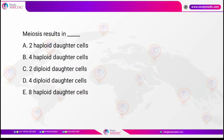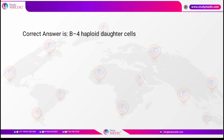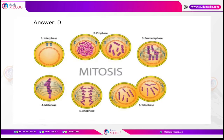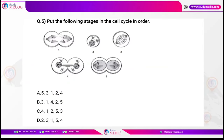Meiosis results in 4 haploid daughter cells — the answer is B. In the diagram showing stages of the cell cycle, the correct sequence is: interphase, followed by prophase, metaphase, anaphase, and telophase. In the picture, 2 is the interphase, 3 shows chromosomes aligning at the equatorial plate (metaphase), 1 shows them being pulled apart (anaphase), 5 shows separation and formation of the nuclear membrane (telophase), and 4 shows cytoplasmic division and formation of two daughter cells. The correct answer is 2, 3, 1, 5, 4 — option D.